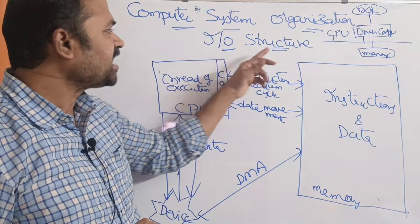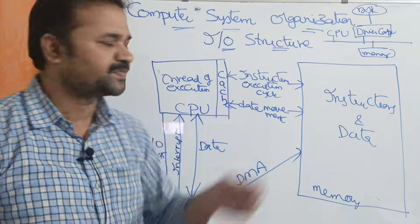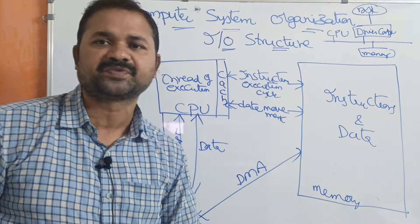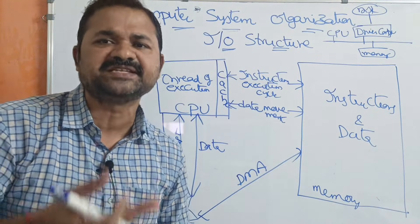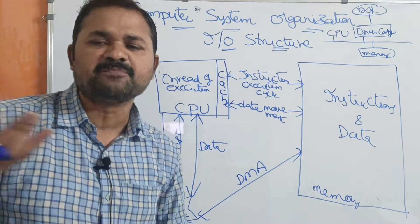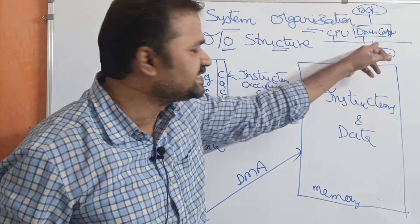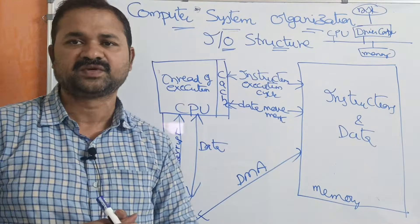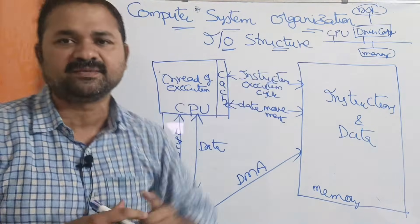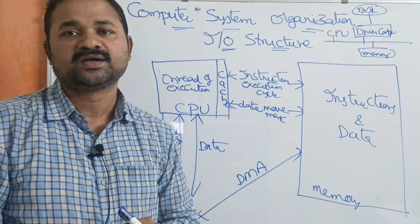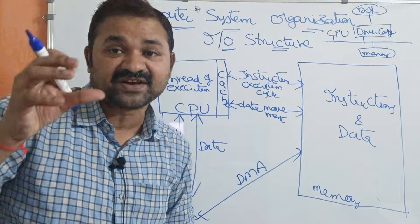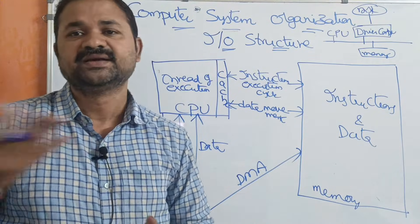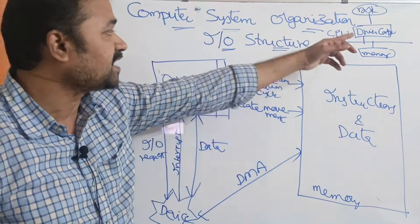Let us discuss about I/O structure in operating system. The I/O structure concept comes under computer system organization. There are three concepts in computer system organization: the first one is computer system operations, the second concept is storage structure, and the third one is I/O structure.